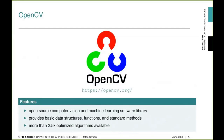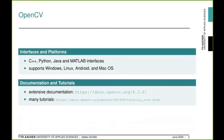OpenCV is an open-source computer vision and machine learning software library providing basic data structures, functions, standard methods, and more than 2,500 optimized algorithms. It has interfaces for many languages — C++, Python, Java, and MATLAB — and supports major platforms including Windows, Linux, Android, and macOS. Extensive documentation and many tutorials are available on the OpenCV homepage, with much more to find on the internet.